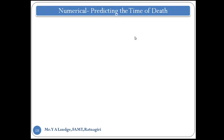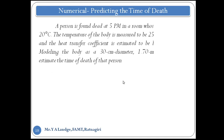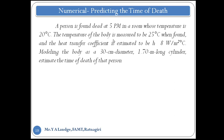This numerical predicts the time of death. A person is found dead at 5 pm in a room whose temperature is 20 degree Celsius. The temperature of the body is measured to be 25 degree Celsius, and the heat transfer coefficient is estimated to be 8 Watt per meter square per degree Celsius. Modeling the body as a 30 centimeter diameter and 1.70 meter long cylinder, estimate the time of death of the person.